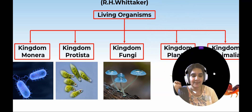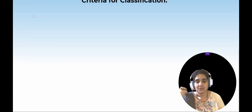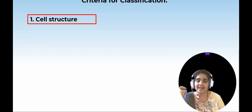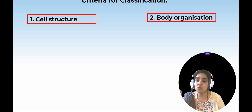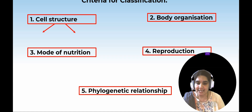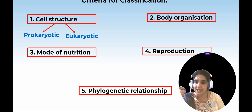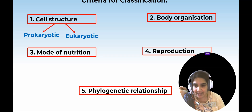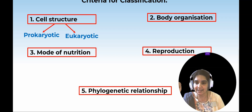What is the need for classification? What is the basis and criteria for classification? It is based on cell structure — whether the organisms have a true nucleus surrounded by a true nuclear membrane. Based on cell structure, organisms are classified into prokaryotic and eukaryotic. If the nucleus is not surrounded by the nuclear membrane, we call them prokaryotic.